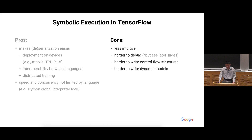Another shortcoming of symbolic execution is that it's harder to write control flow structures — things like looping over a number of items or if-else branches, the kind of thing we encounter every day in programming. But some machine learning models also need to do that: recurrent neural networks need to loop over things, and some fancy dynamic models need if-else branches. It's sometimes very hard to write that kind of control flow in symbolic execution, but it's much easier in eager execution.